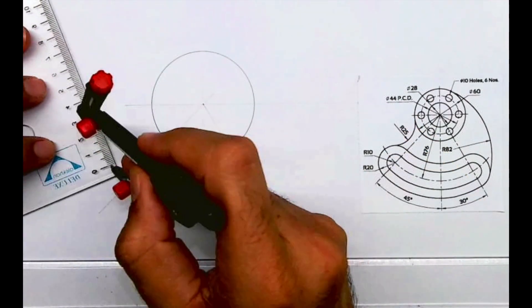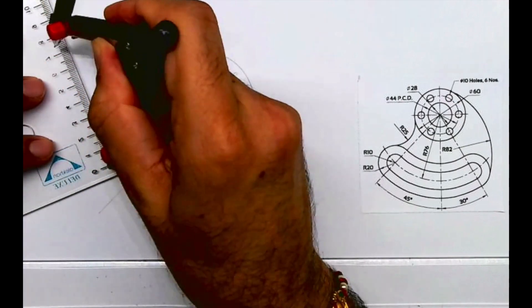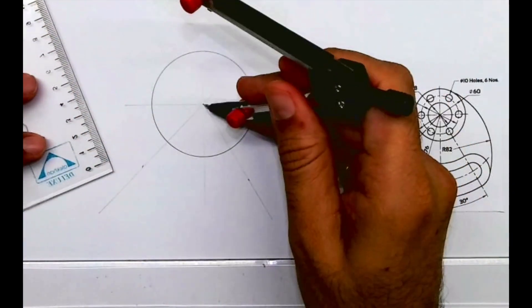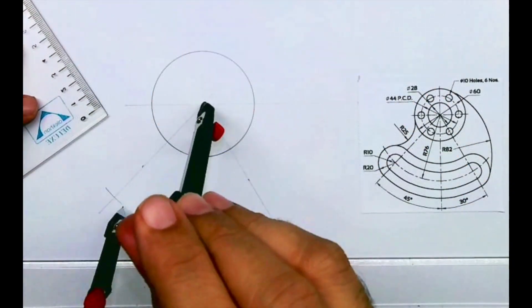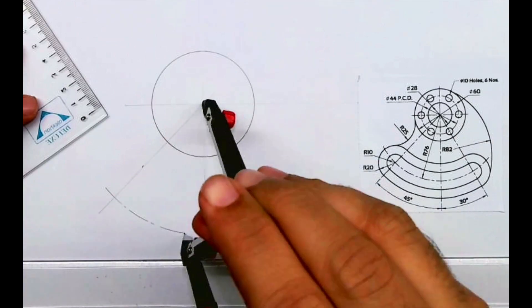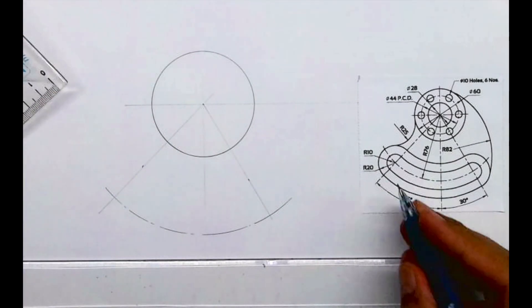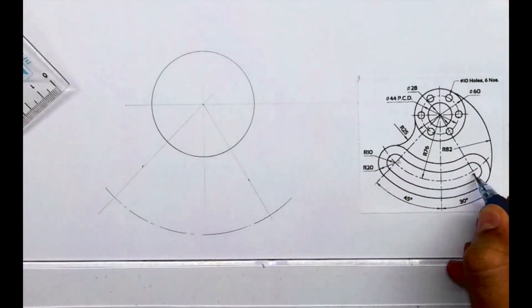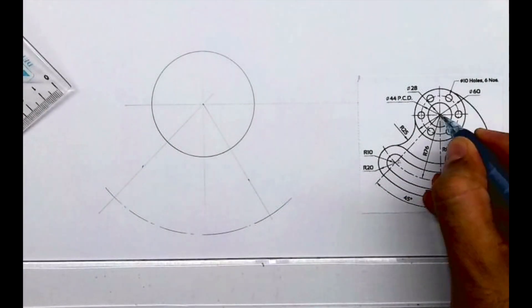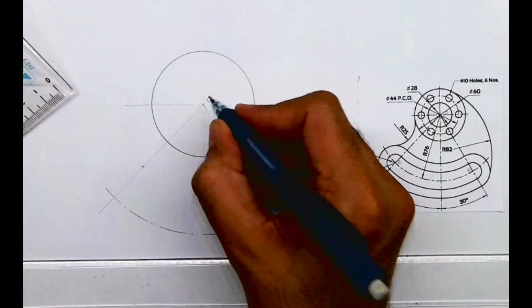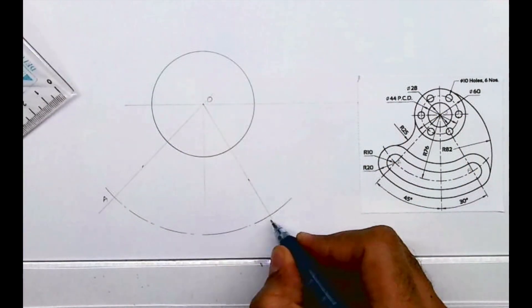Then we'll draw radius 76, so you will take 76 and you will draw an arc. And now this is point A, B, and O. So this is O, this is A, and this is B.